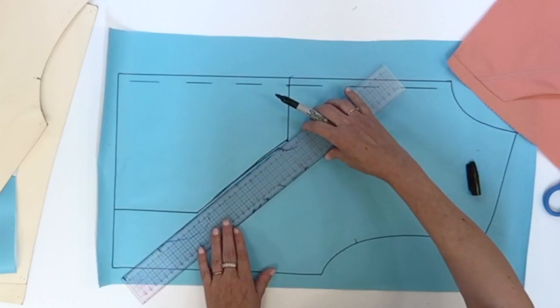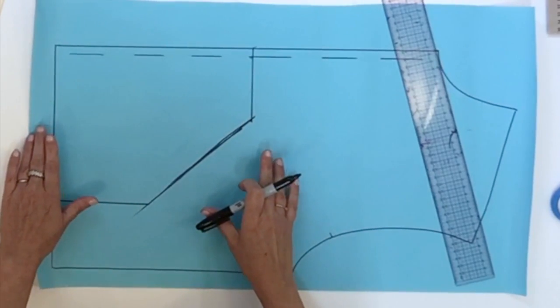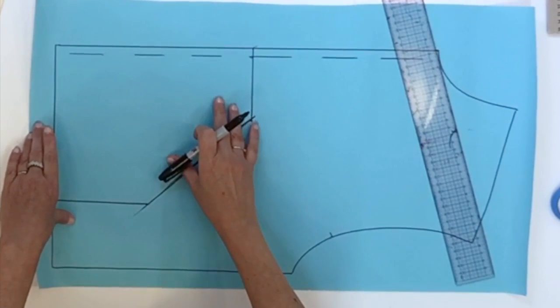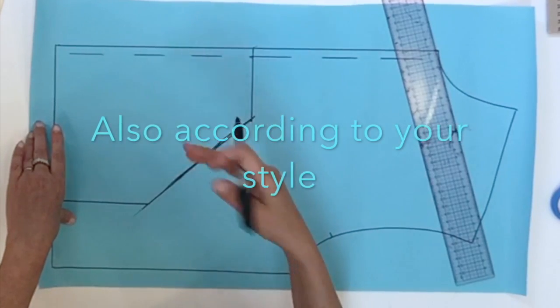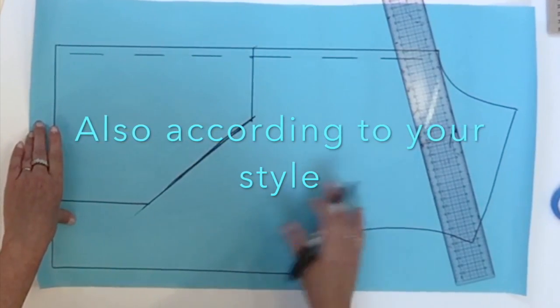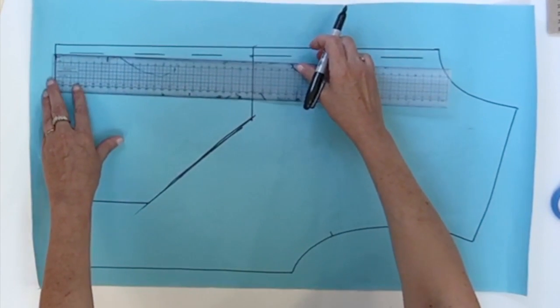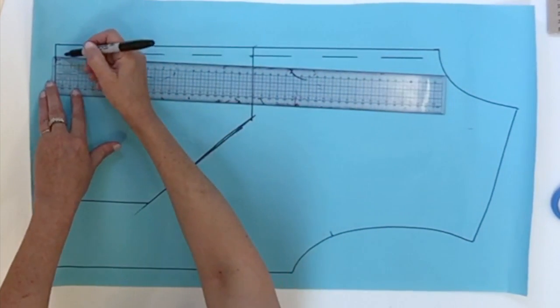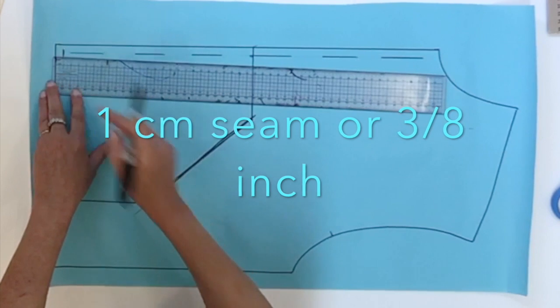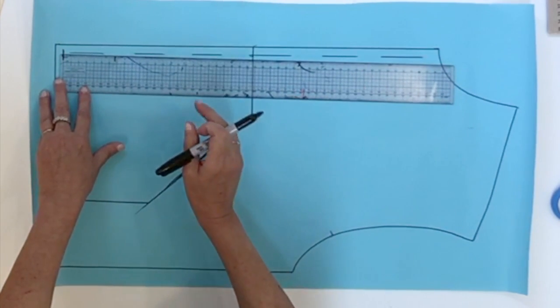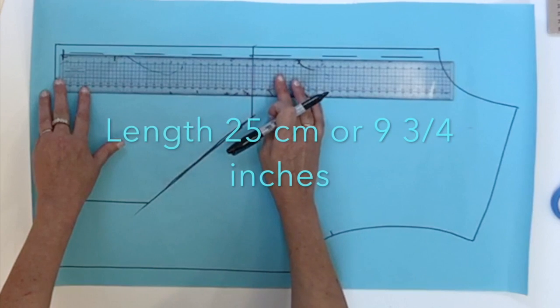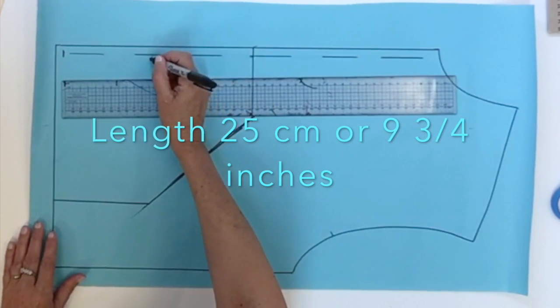Now we can fix the diagonal line. Before going any further, I'm going to give you my measurements, but it's all according to the bodice or pattern that you're starting with. For this one, my pocket measurement, if I calculate that I have a one centimeter seam allowance at the bottom, the real length of the pocket is about 25 centimeters.